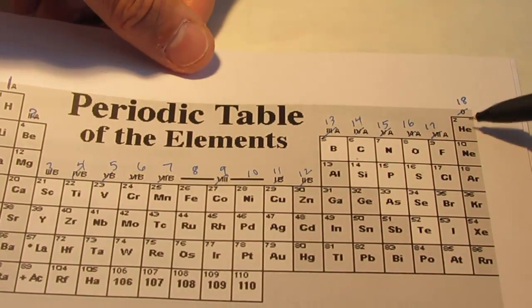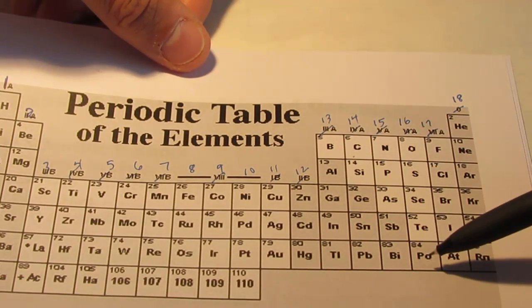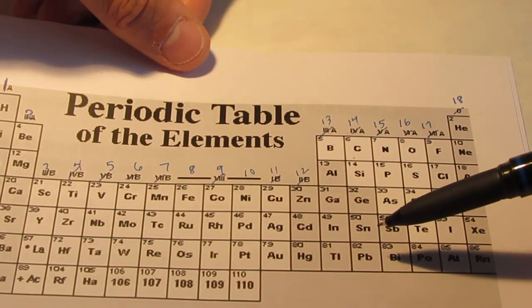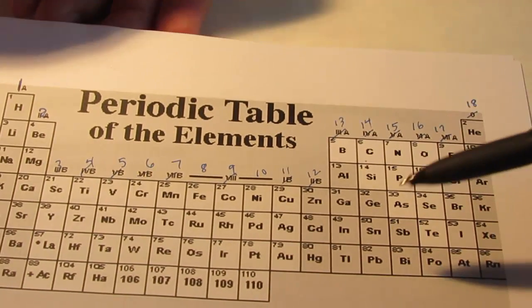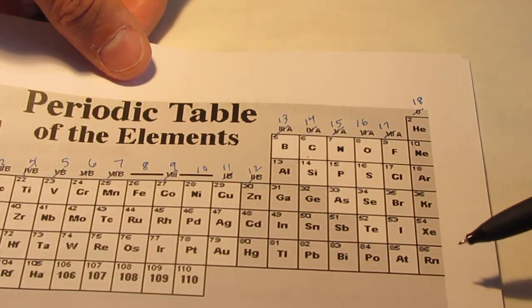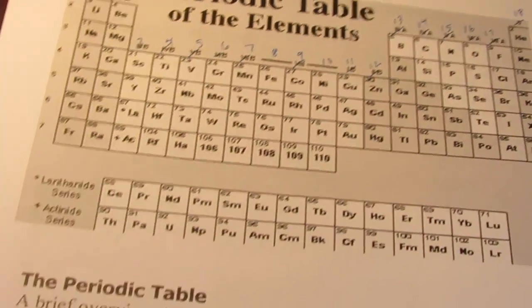Right now, you need to know so far that these vertical columns are called groups or families, and they are numbered from 1 to 18. Now, members of the same group have similar chemical properties. So, they are said to be in the same family. Members of the same family are similar to each other. And members of the same family on the periodic table also have certain similarities.